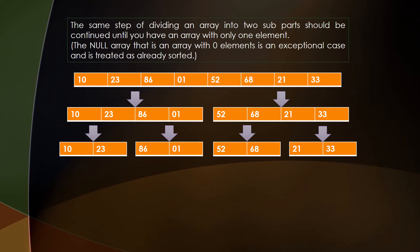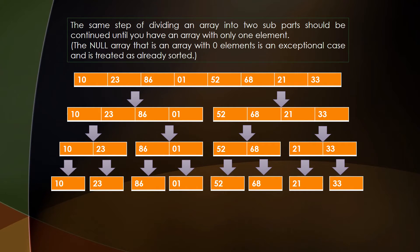So again we will divide these four sub-arrays to get n arrays of only single element. So here it is, we get eight sub-arrays having only one single element in each of them.